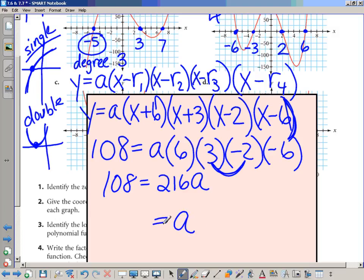So 108 would equal 216A. It's going to be positive because a negative times a negative will make a positive. When you divide both sides by 216, you find that A equals one half. So the final answer for writing this in factored form will be y equals one half times (x + 6)(x + 3)(x - 2)(x - 6).